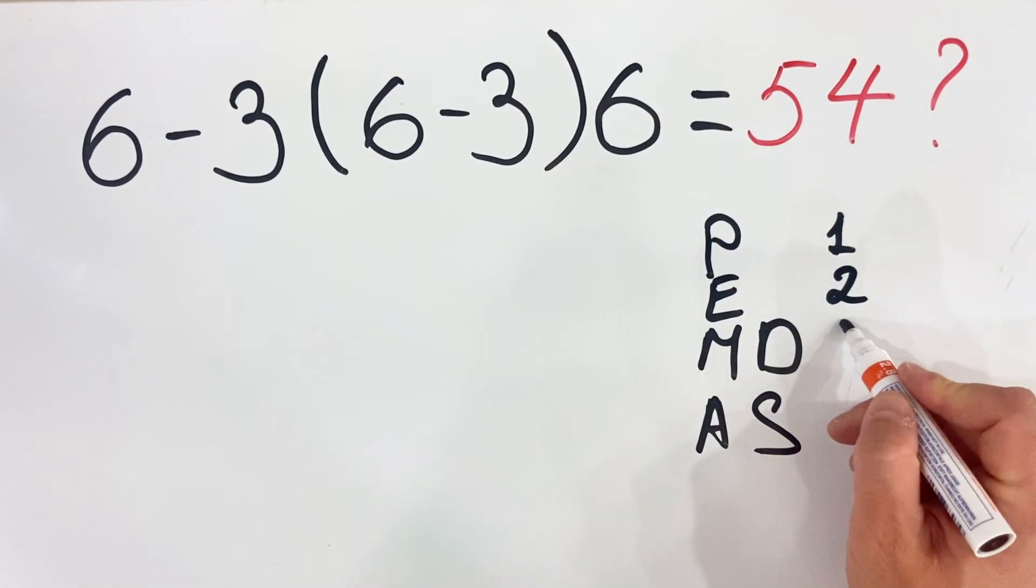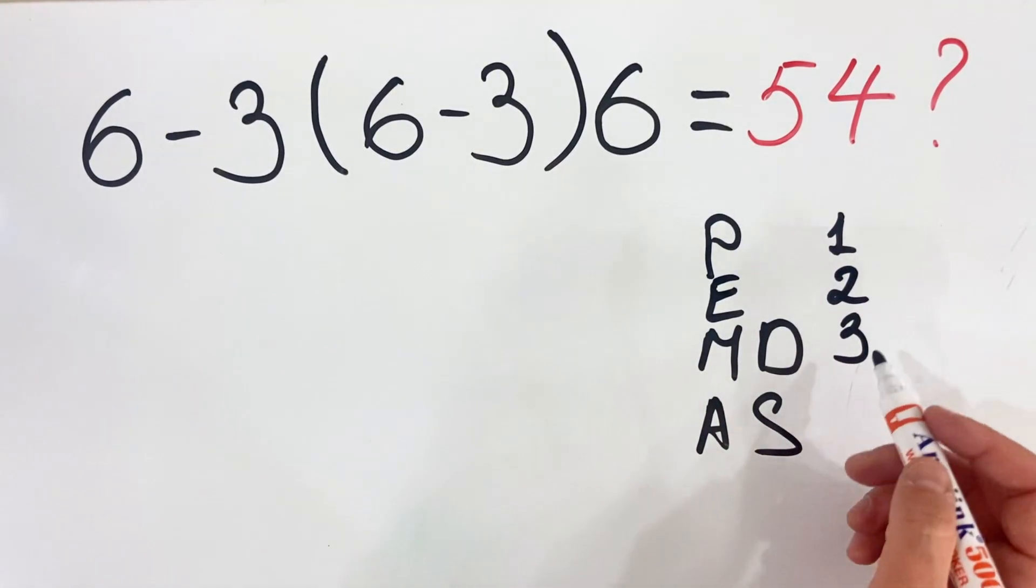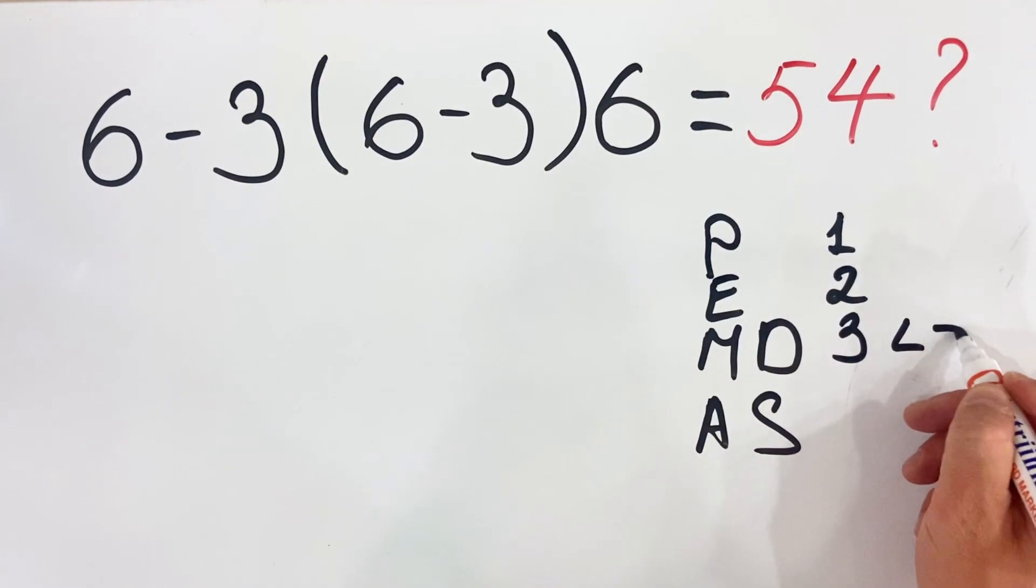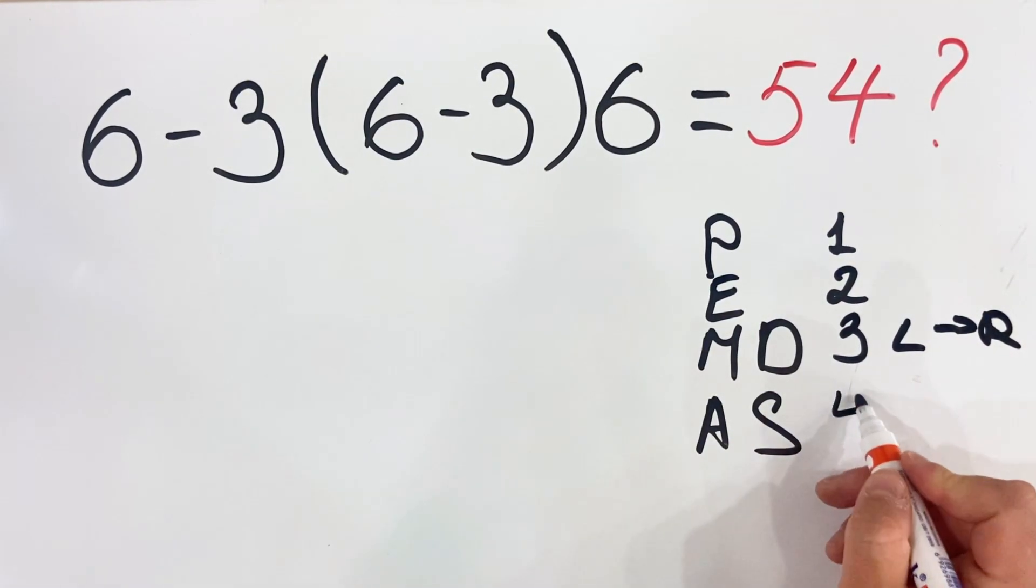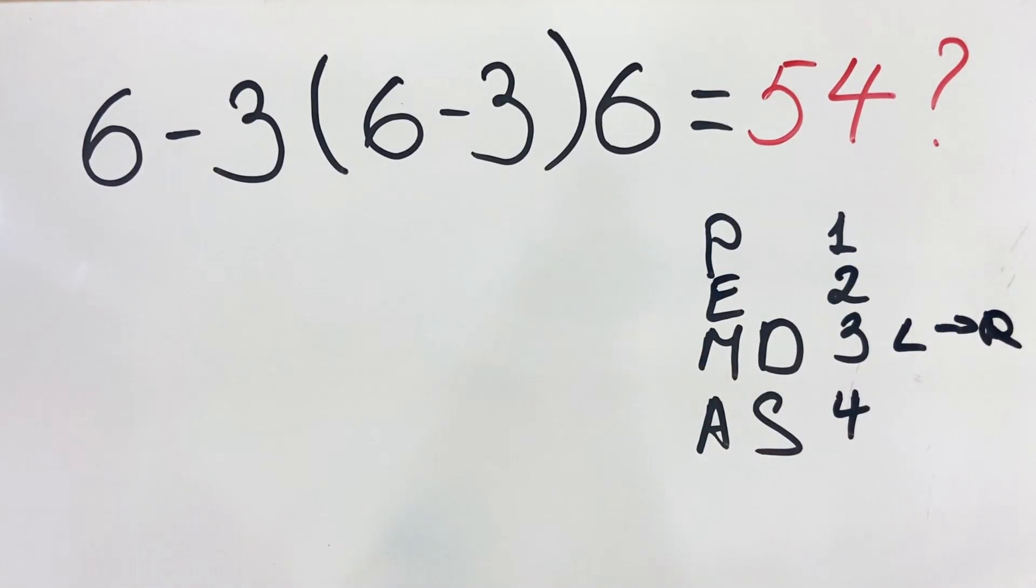Multiplication and division are always in the third place. They have equal priority and we do them from left to right. Addition and subtraction are in the fourth place.